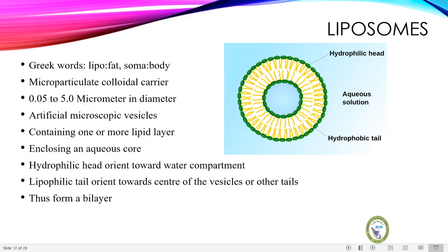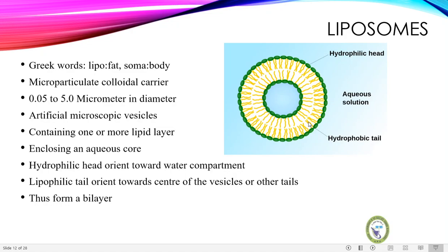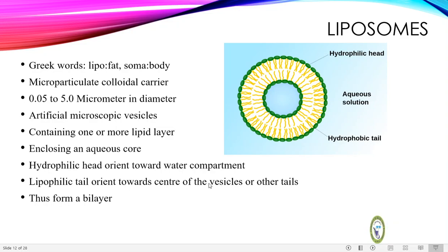Liposomes are artificial microscopical vesicles — smaller sacs containing one or more lipid layers — which enclose an aqueous core. The hydrophilic head is oriented towards the water compartment while the lipophilic tail is oriented towards the center of the vesicle or towards other tails. These hydrophobic tails and hydrophilic heads form a bilayer.